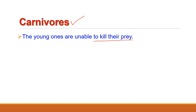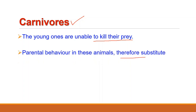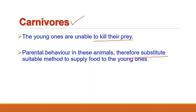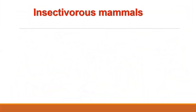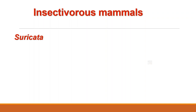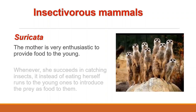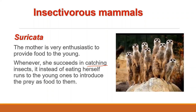In carnivores, the young ones are unable to kill their prey which constitutes their food. Parental behavior in these animals therefore substitutes suitable methods to supply food to the young ones. For example, the mother may carry a portion of prey killed by her to feed the young, as seen in foxes, raccoons, dogs, and domestic cats. In case of insectivore mammals like Suricata, the mother is very enthusiastic to provide food to the young. Whenever she succeeds in catching an insect, instead of eating it herself, she runs to the young ones to introduce the prey as food to them.